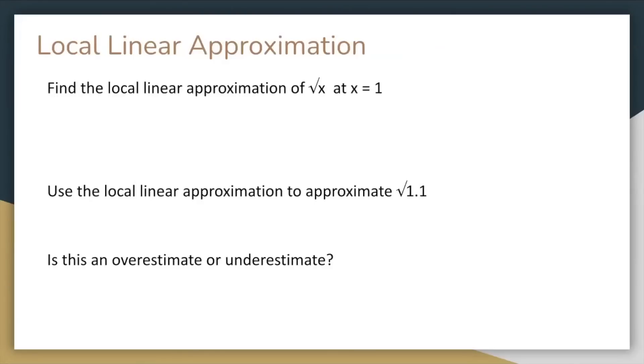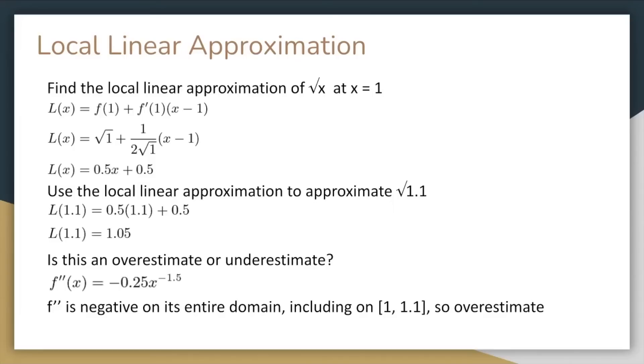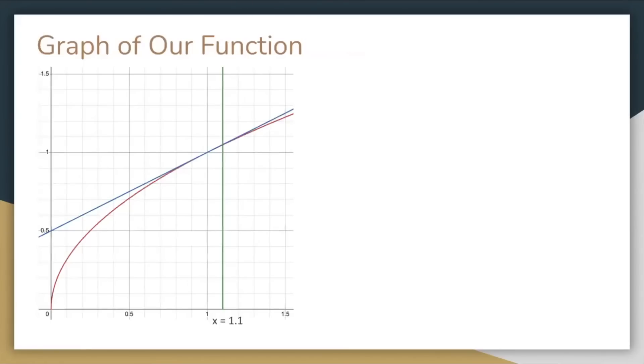The local linear approximation is just the equation of the line tangent to a point. So for the local linear approximation of square root of x at x equals 1, for example, you just plug in the values into the formula for the tangent line, and you can solve for f prime of x using the power rule. The equation you get is l of x equals 0.5 x plus 0.5. To approximate the square root of 1.1, you just plug 1.1 into this equation to get 1.05. And this is an overestimate because if you solve for f double prime, you'll get that the graph is concave down on its entire domain, so the tangent line is always above the graph. And here's what the graph looks like.